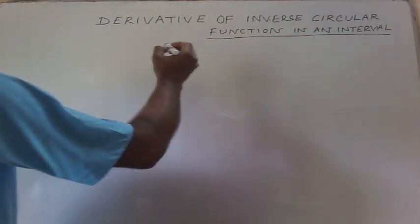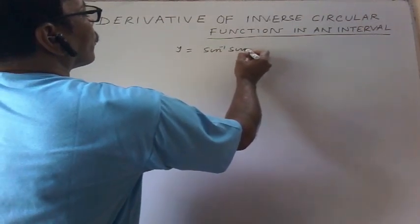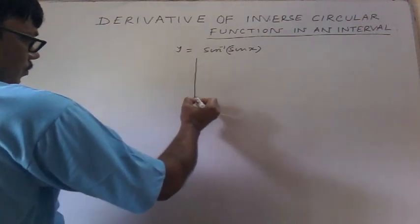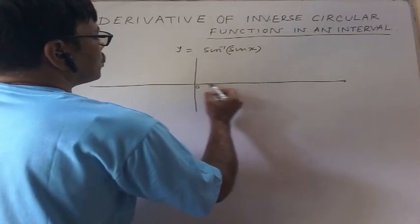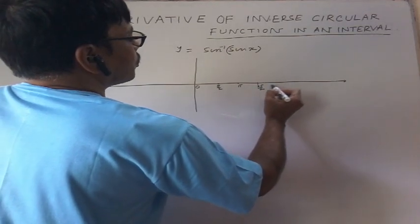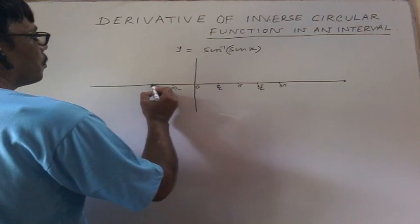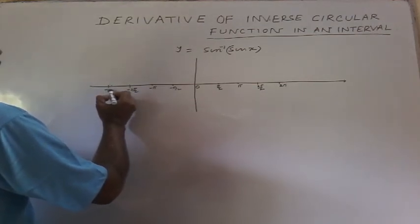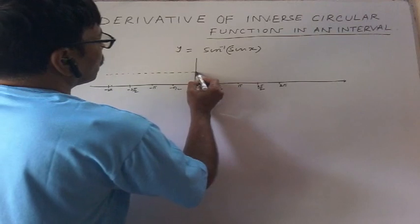Look at the graph y = sin⁻¹(sin x). The x-axis has values 0, π/2, π, 3π/2, 2π, and on the negative side: −π/2, −π, −3π/2, −2π. The maximum value is 1, that is y = 1.